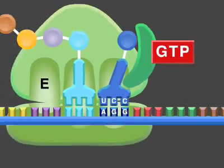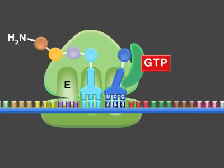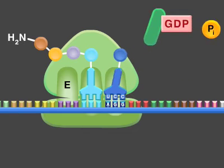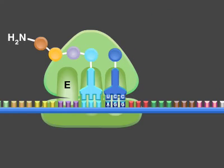Elongation factor TU hydrolyzes its bound GTP and dissociates. If the tRNA is correctly matched and remains bound for a long enough time, it is committed to be used in protein synthesis.